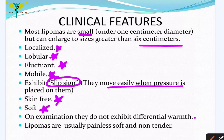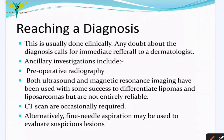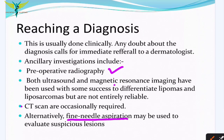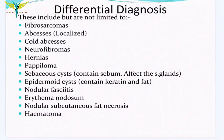Lipomas are usually painless, soft, and non-tender. Diagnosis is usually done clinically. Other investigations include pre-operative radiography, ultrasound, and MRI — which can sometimes differentiate between lipomas and liposarcomas. CT scans are very occasionally required, and FNAC (fine needle aspiration cytology) may be used in suspicious lesions.